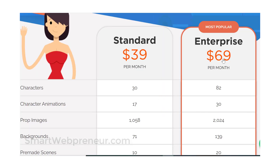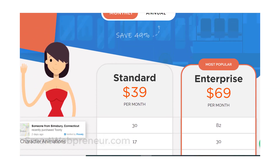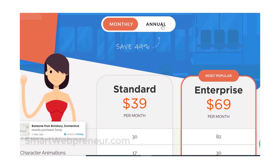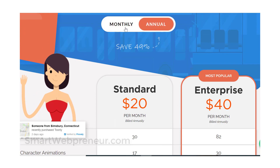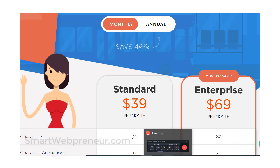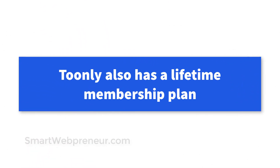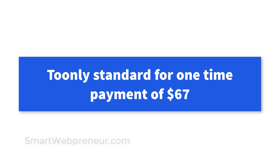Toonely also has a standard plan and an enterprise plan. The standard plan costs $39 per month if you choose to pay monthly, and $20 per month if you choose to pay annually. Similarly, the enterprise plan costs $69 per month with the monthly subscription, and $40 per month with the annual subscription. There is also a lifetime membership offer being run on social media, with which you can get Toonely standard for a one-off payment of $67.